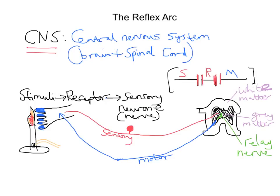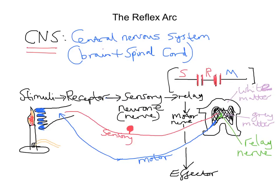After the sensory nerve comes the relay, then after the relay we have our motor nerve. From the motor nerve we go to what's called our effector. The effector is the part of the body that's going to bring about a response. So we have: stimuli being detected by a receptor; the sensory information is passed down a sensory nerve; it goes to the spine where it reaches a relay nerve; that synapses with a motor neuron; and that transmits information to an effector, which will bring about a response.